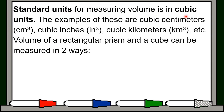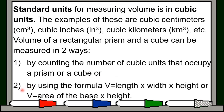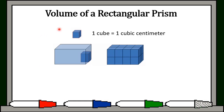Standard units for measuring volume is in cubic units. Examples are cubic centimeters, cubic inches, cubic kilometers, etc. The volume of a rectangular prism and a cube can be measured in two ways: first, by counting the number of cubic units that occupy a prism or a cube; or by using the formula — volume equals length times width times height, or volume equals area of the base times height.